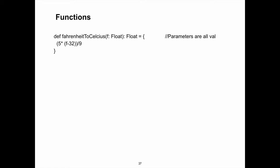Defining functions: it's `def` and the name of the function, arguments, then return type, then equals and the body. With type inference we can skip the return type if the compiler can infer it from the computation. For example, if you're doing a computation on a float, the compiler knows the return type is float.